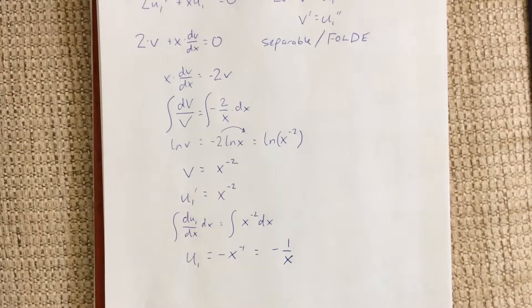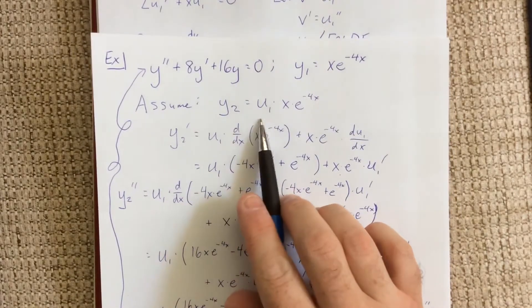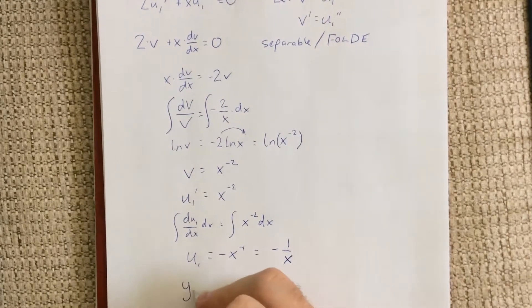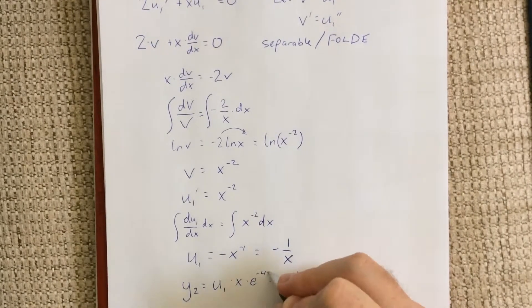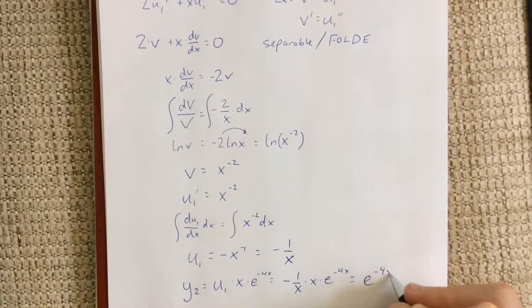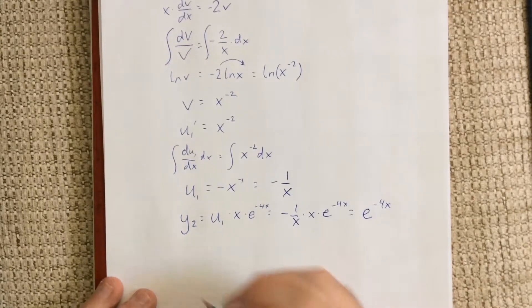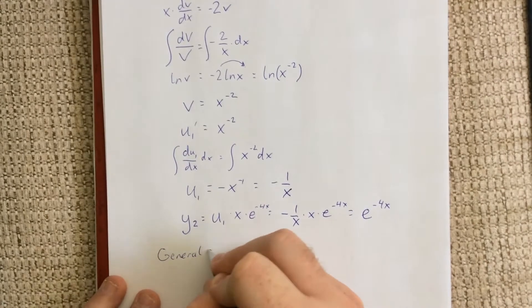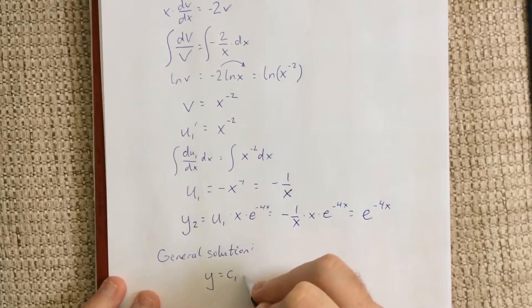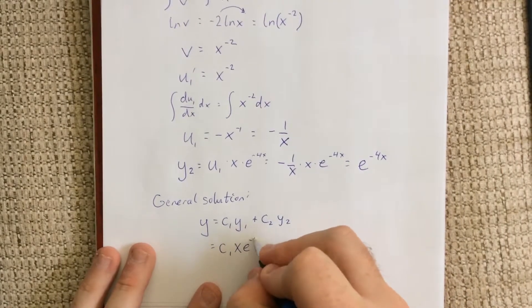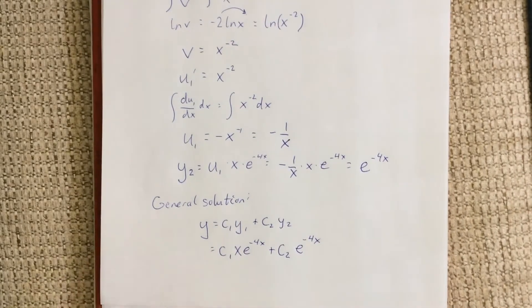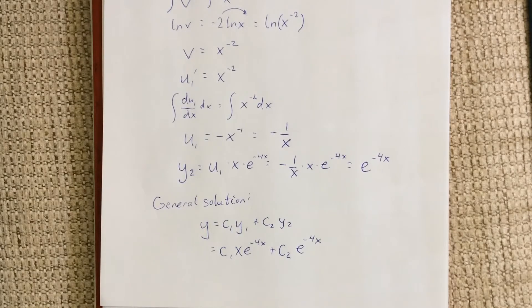This gives us access to our second linearly independent solution. We operated under the assumption that y2 equals u1 times x times e to the negative 4x. Now we have what that is: negative 1 over x times x times e to the negative 4x, which is simply e to the negative 4x. The general solution is a linear combination of y1 and y2: y equals c1 times x e to the negative 4x plus c2 times e to the negative 4x. I hope you found this tutorial useful. Questions are encouraged — I'll see you next time.